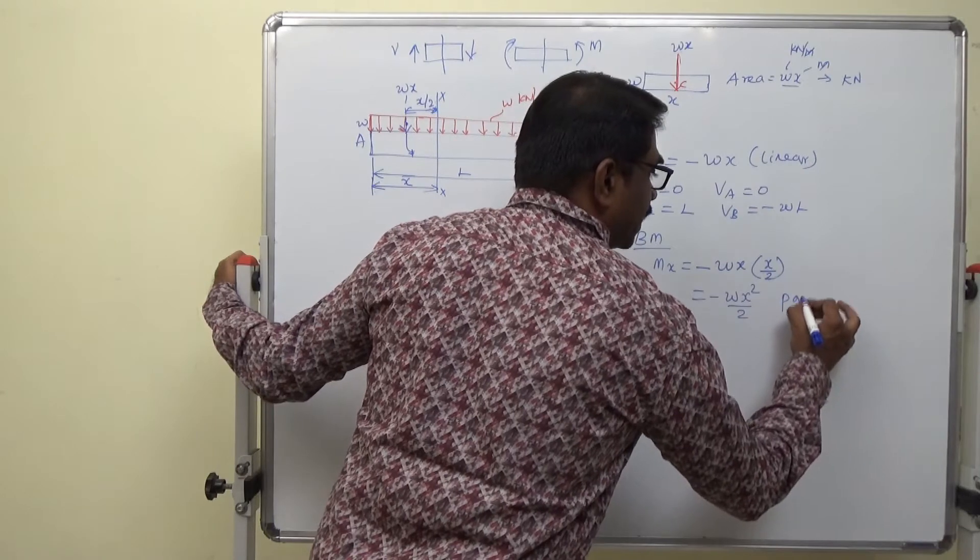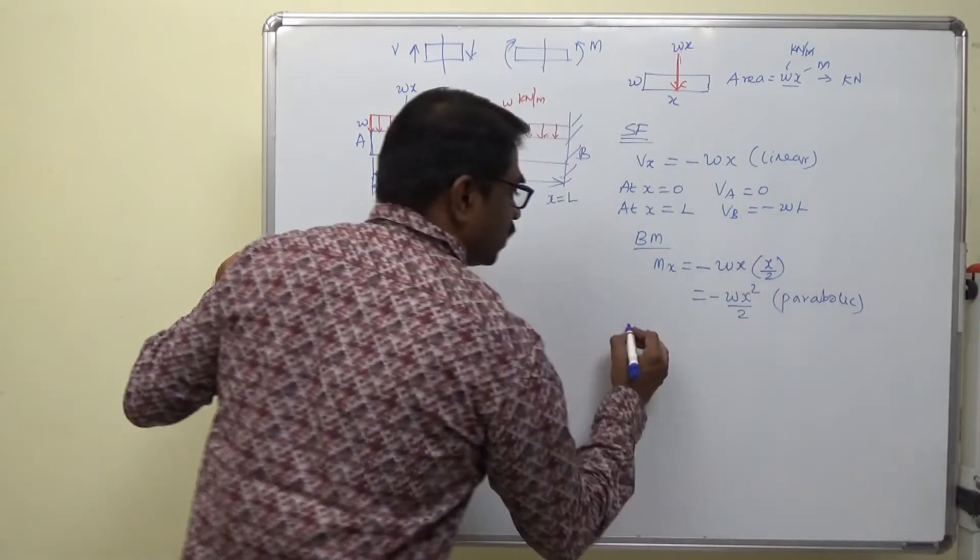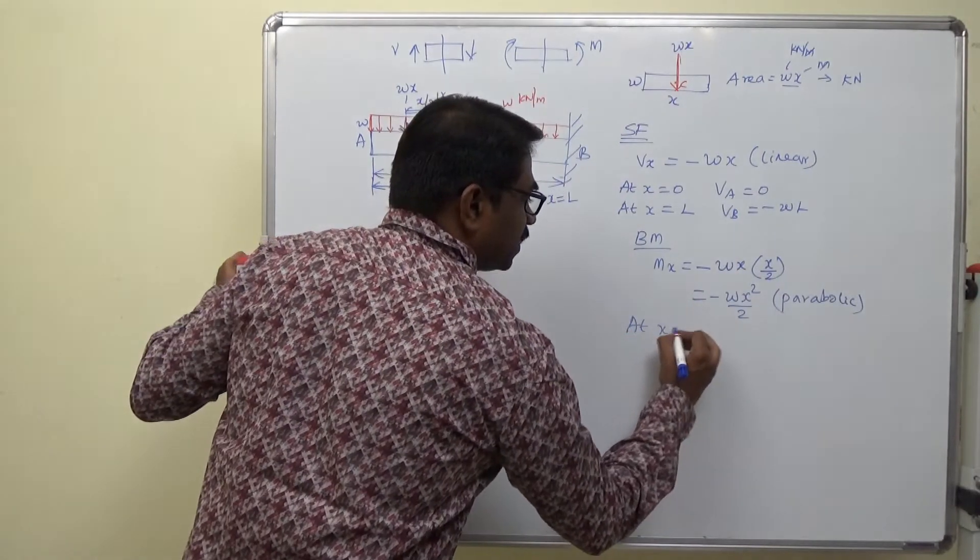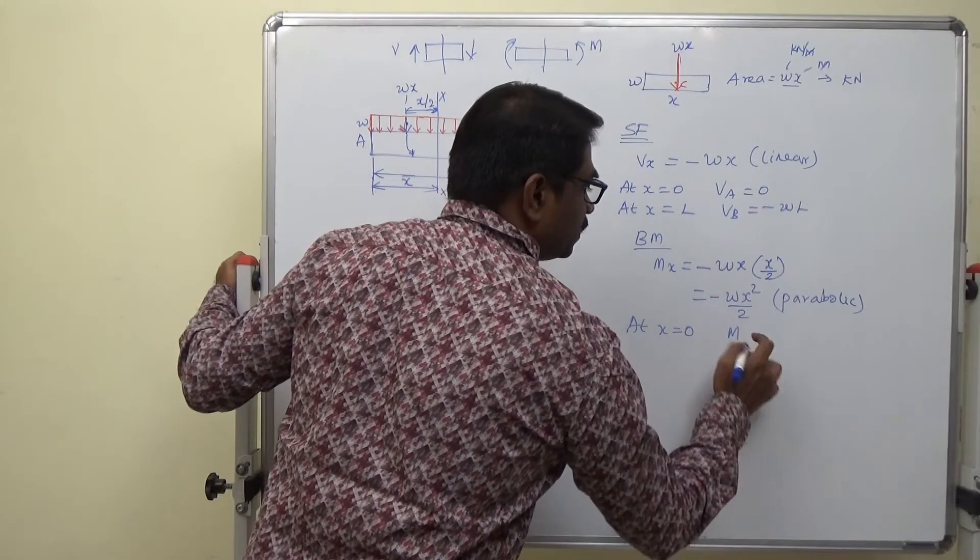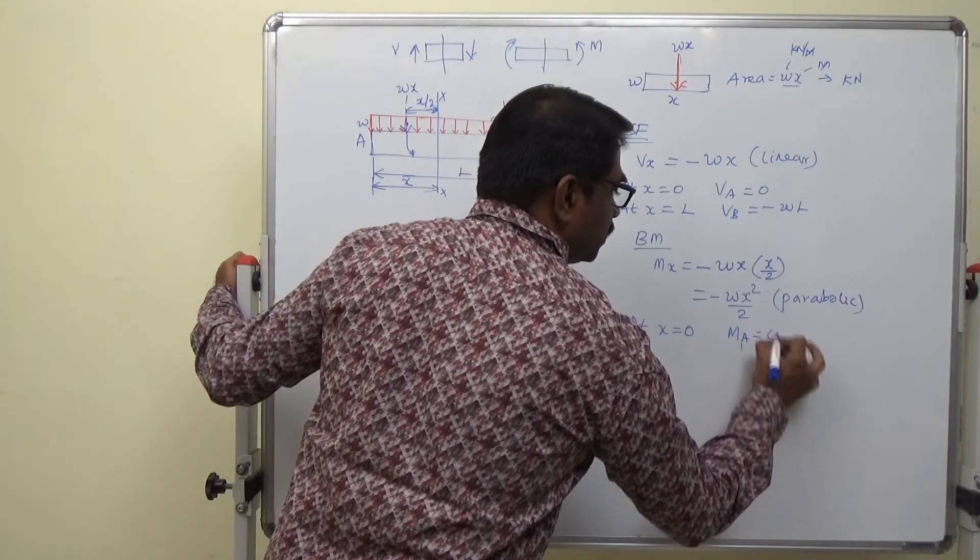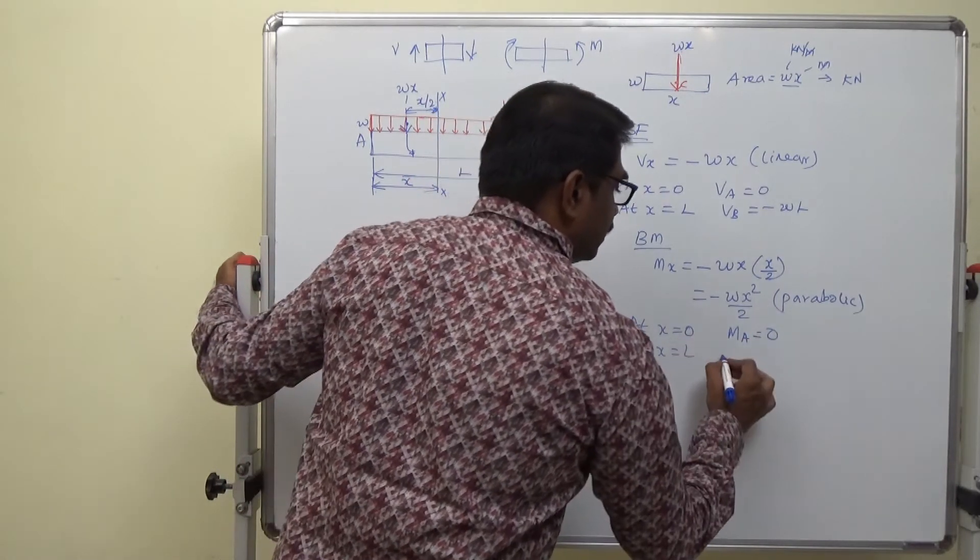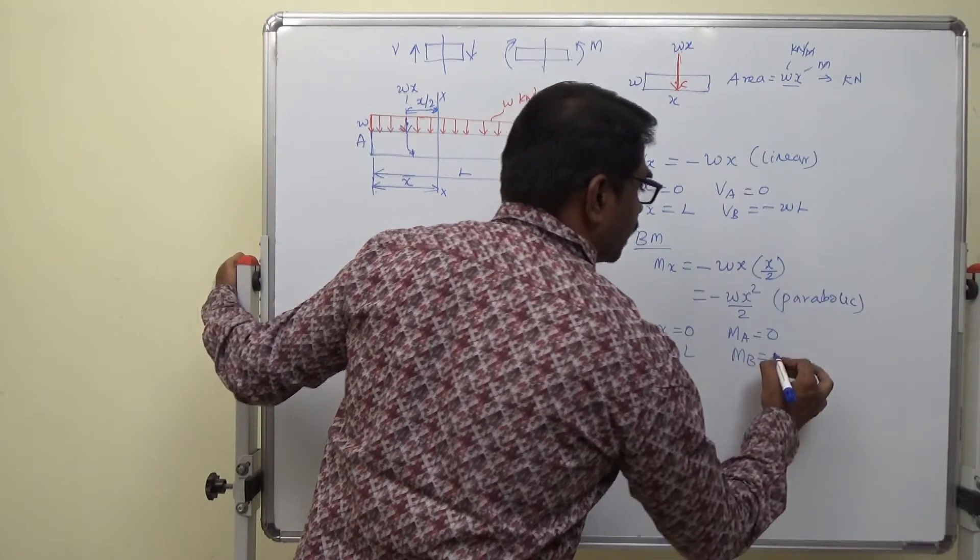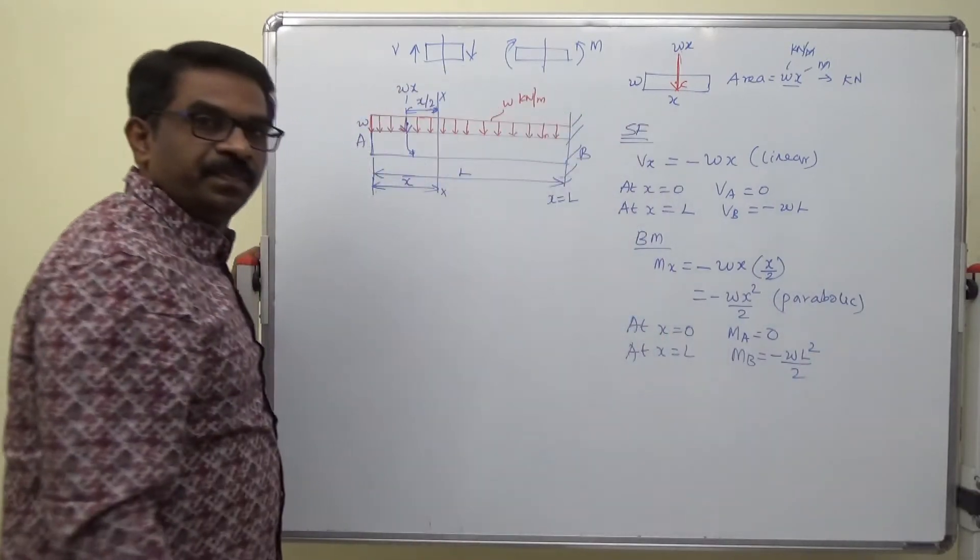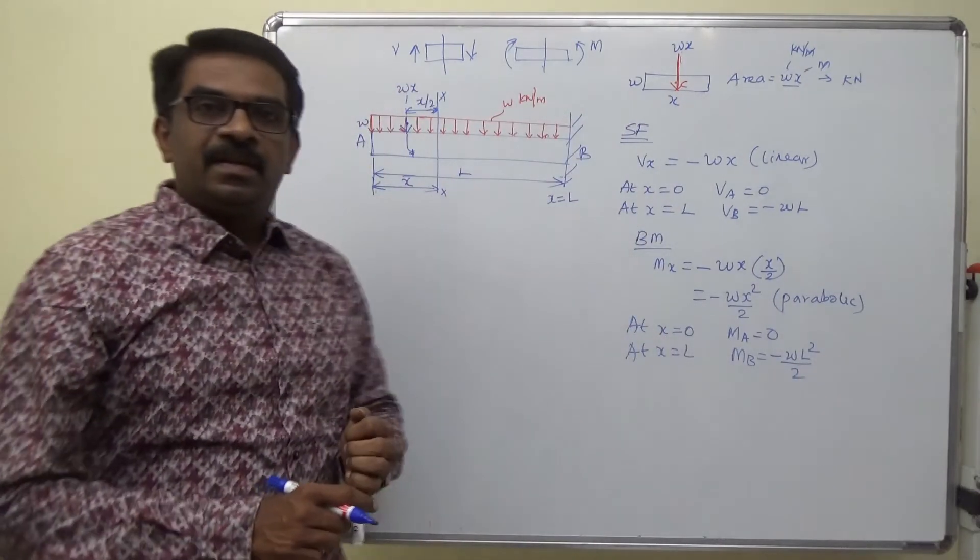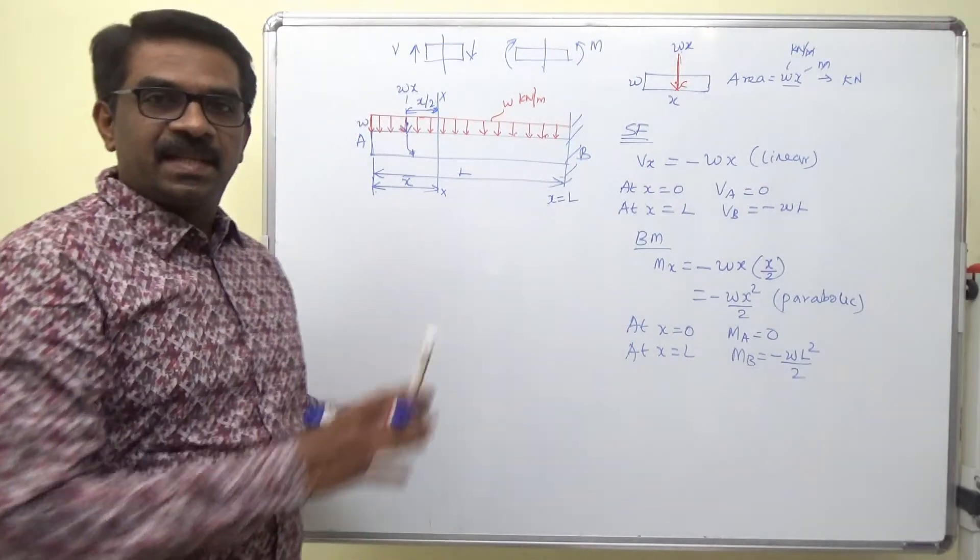It is a parabolic function. At x equal to L, M_B equal to minus W L square by 2. We have found out the shear force and bending moment for this given beam.